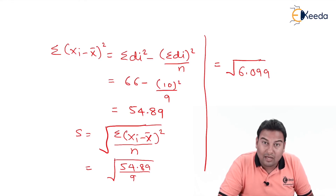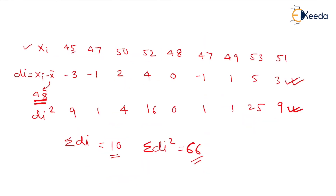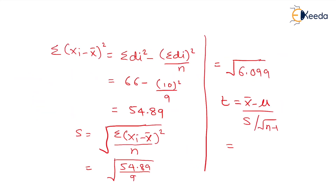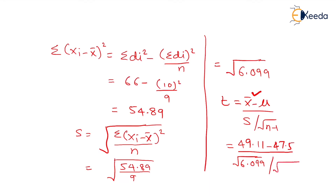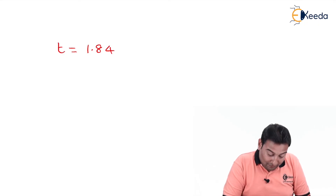Let us move on to the last step to get the value of T. The formula is T = (x̄ - μ) / (S / √(n-1)). Note that x̄ here is the actual mean 49.11, not the assumed 48 used earlier. So T = (49.11 - 47.5) / (√6.099 / √8). After solving, T equals 1.84.